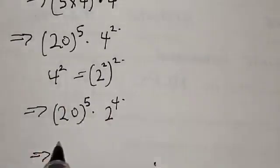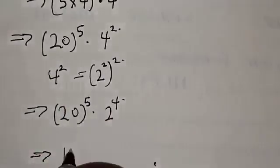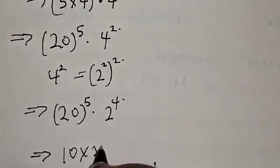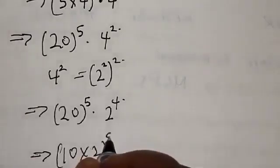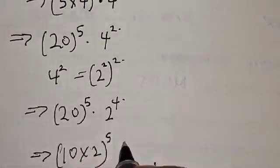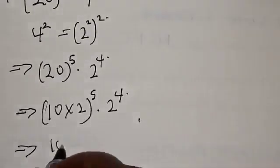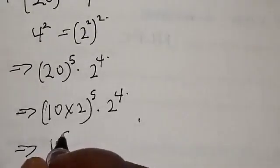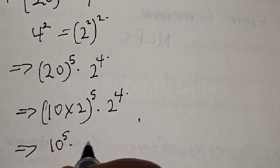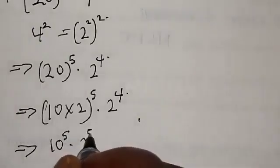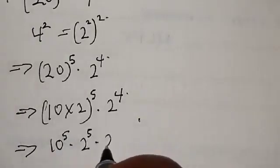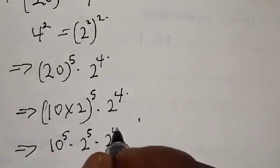Now 20 can also be expressed as 10 times 2, so we have 10 times 2 raised to power 5, multiplied by 2 raised to power 4. Applying the product rule again, this implies we have 10 raised to power 5 multiplied by 2 raised to power 5 multiplied by 2 raised to power 4.